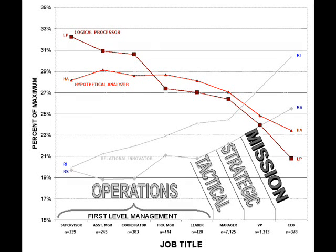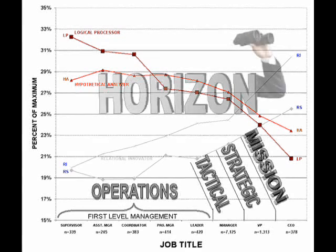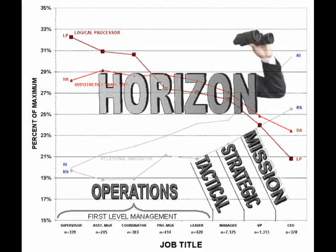At the CEO level, interest moves to mission — the ultimate goals and objectives of an organization. Horizons extend for 5, 10, or even 20 years. Anything resembling predictability goes out the window, and the value of structure drops still further.